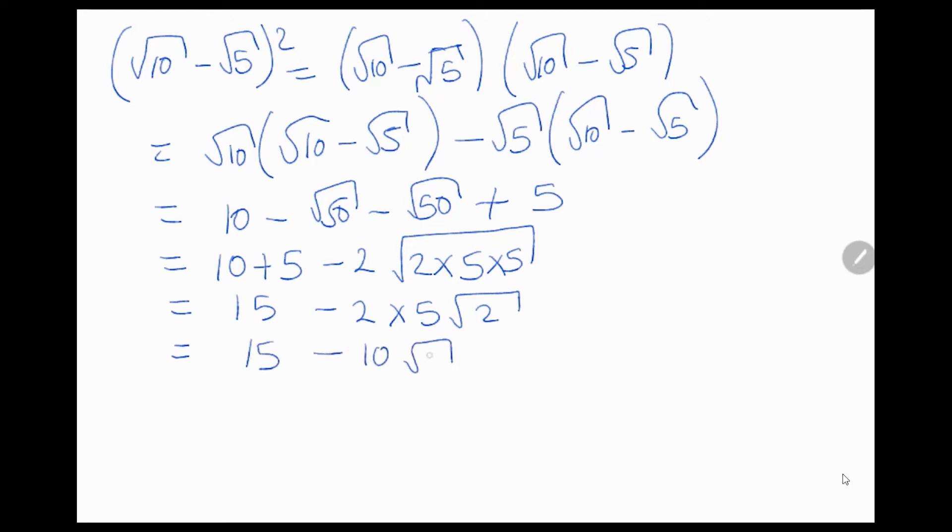which we can then factor out 5, and then it becomes 5 times 3 minus 2 square root of 2, which is the final answer.